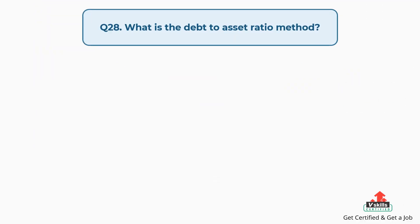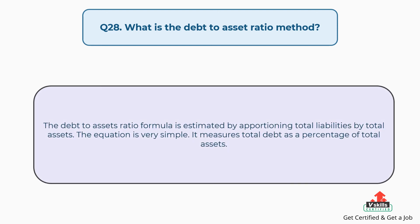Question number twenty-eight: what is the debt-to-asset ratio method? The answer is, the debt-to-assets ratio is estimated by dividing total liabilities by total assets. The equation is simple — it measures total debt as a percentage of total assets.